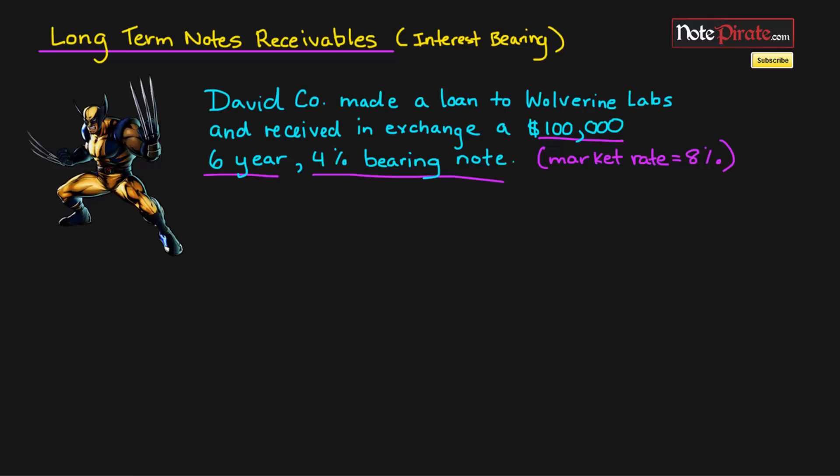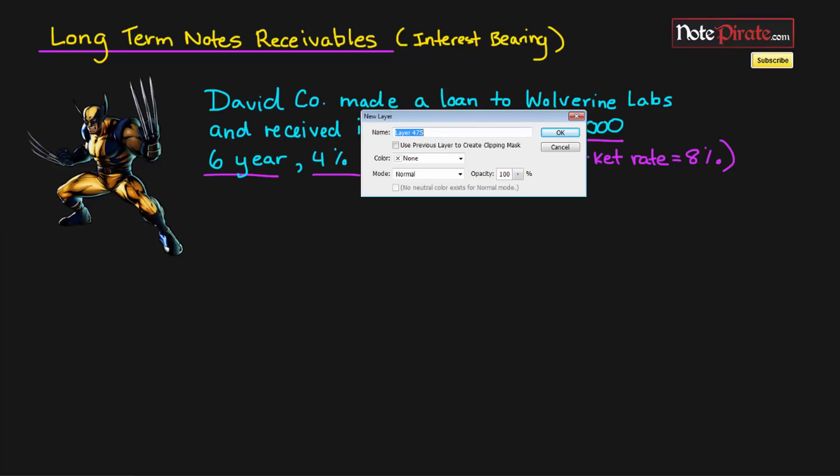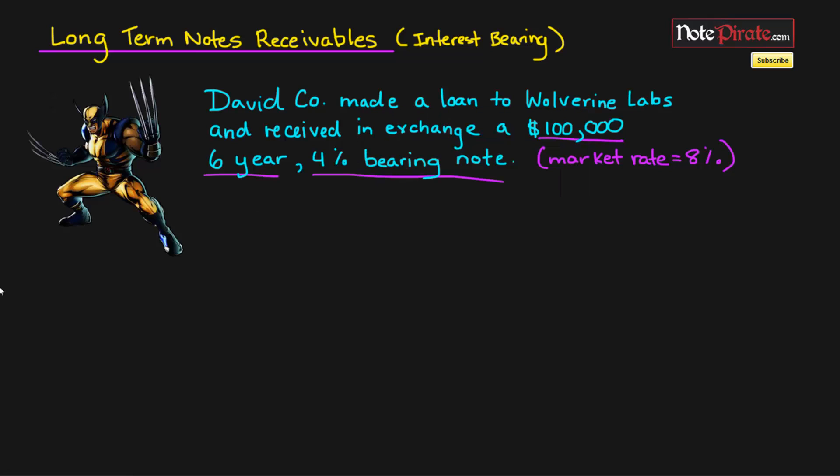So let's go ahead and find the present value for all of the different cash flows, because that's what we need to do in a question like this. So we're going to look at the face value, the term, and the coupon rate, along with the market rate, which is 8%.